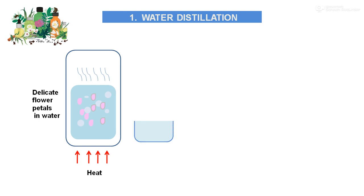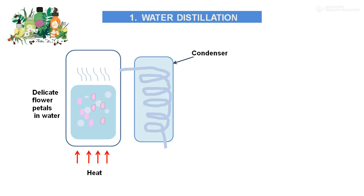In the form of vapors, the essential oil will collect. It collects in the form of water vapors, and we collect it through the condensation process. For this, we need to collect these water vapors through the condenser, where continuously cold water is flowing or available.